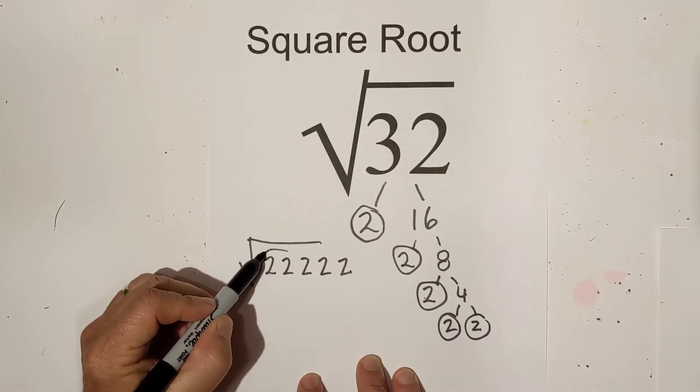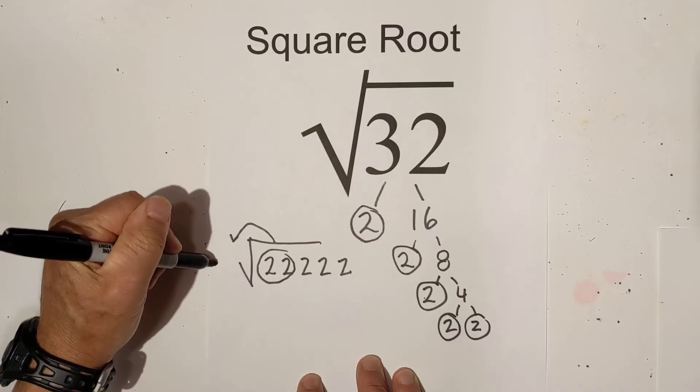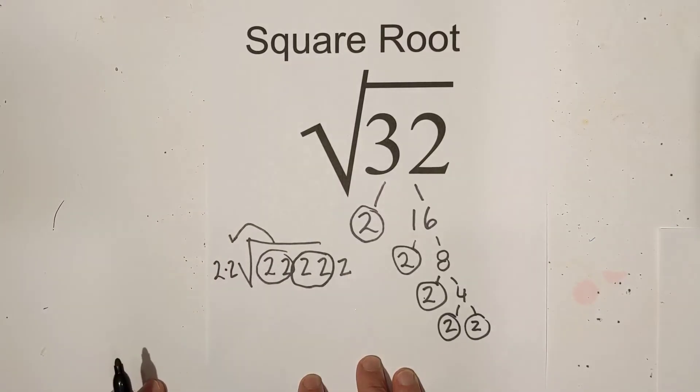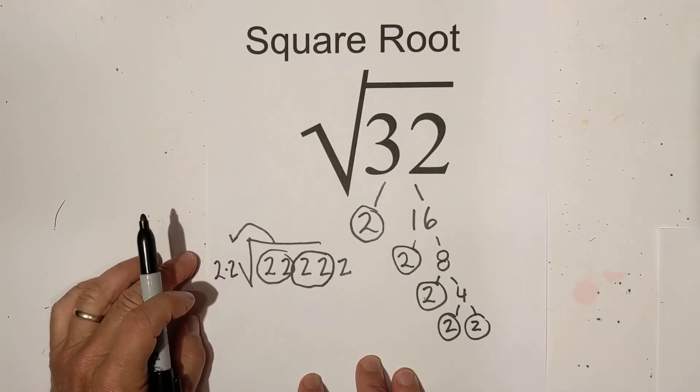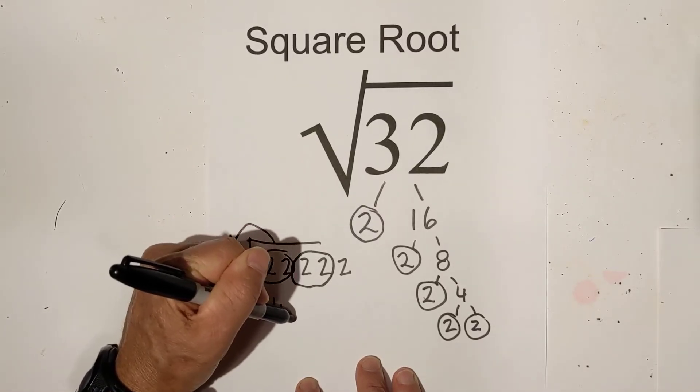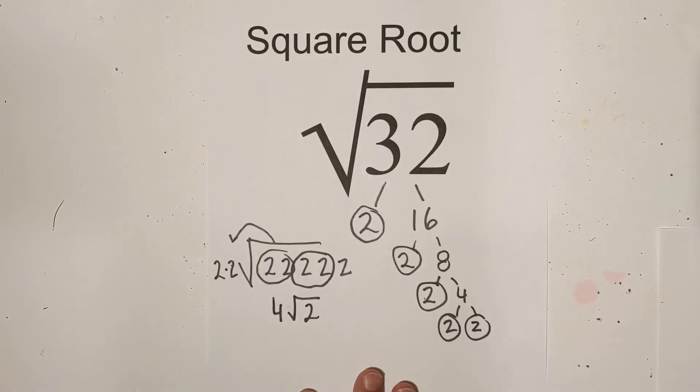So what I can do is pull out pairs. So there's a pair, and we have another pair. And there's one 2 still left underneath the sign. So what I will do is 2 times 2 is 4 square root 2. So there we go, simplified.